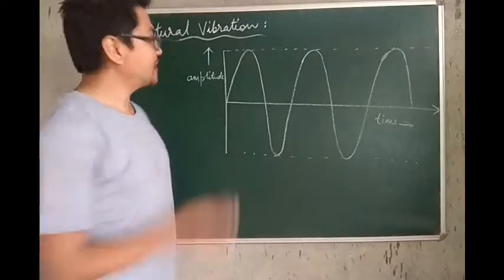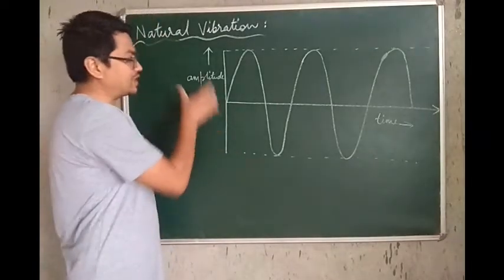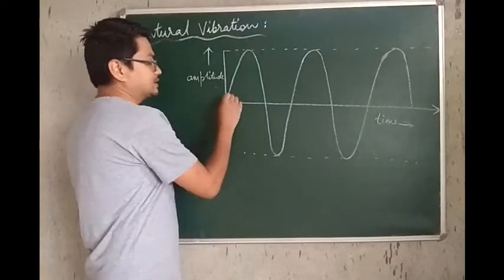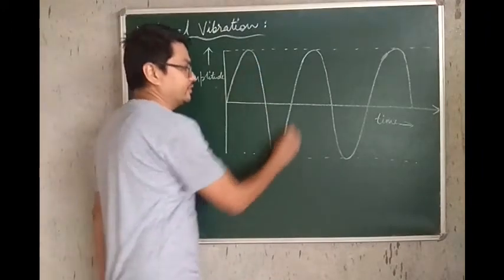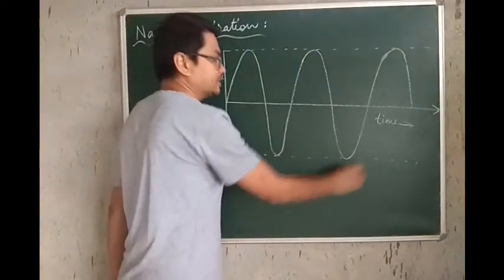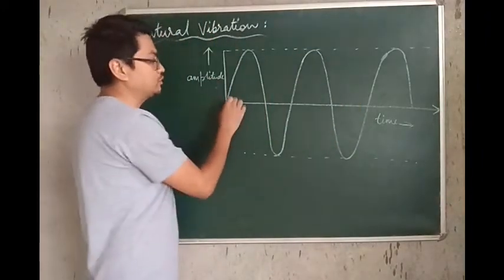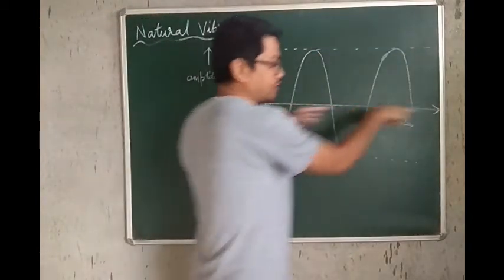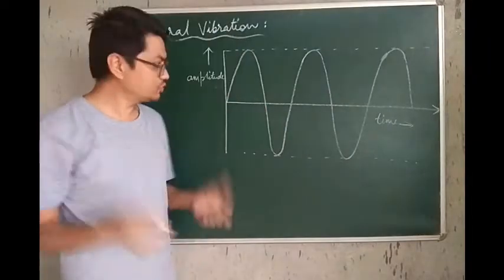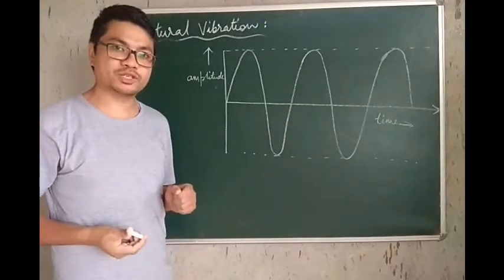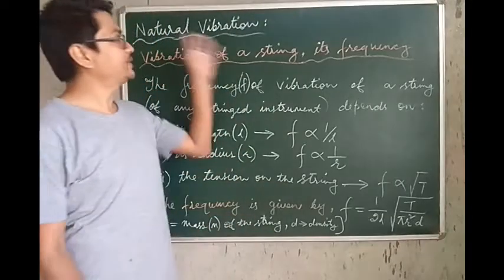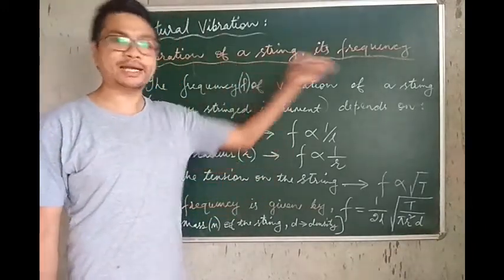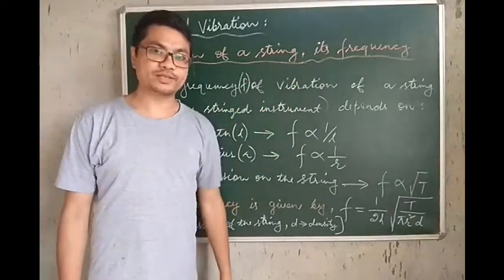In case of natural vibration, if we plot a graph of amplitude versus time, the amplitude of the wave generated due to natural vibration would always remain the same or constant, and it would go on forever. So this is the graph for natural vibration. Under the same heading, let us look at the vibration of a string and discuss its frequency.